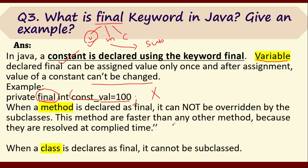Methods declared with final are faster than other methods because they are resolved at compile time — they do not wait for runtime. The third use of final is with a class: if you declare a class as final, you cannot do inheritance of that class — it cannot be subclassed. So: variable declared with final becomes constant; method declared with final cannot be overridden; class declared with final cannot be inherited.